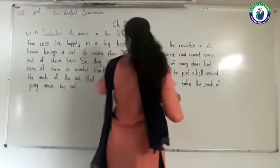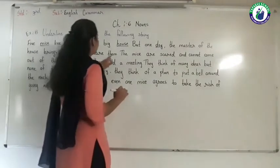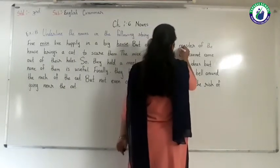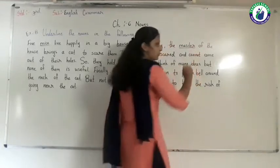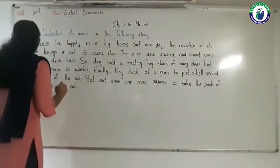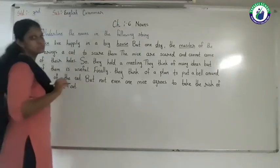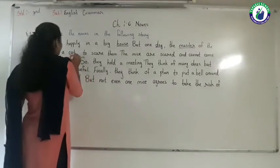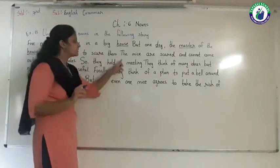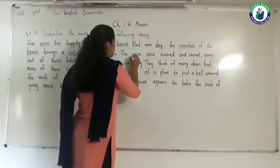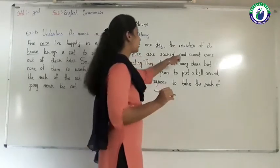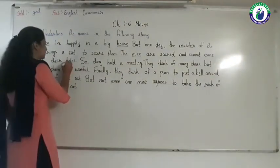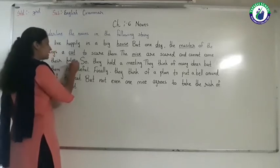The master of the house brings a cat to scare them. Master we include in person — so it is a noun. Again we underline the word house because house is the name of a place. Cat is the name of an animal. The mice — we underline the word mice. Are scared and cannot come out of their holes. Holes we include in place — it is called a noun.